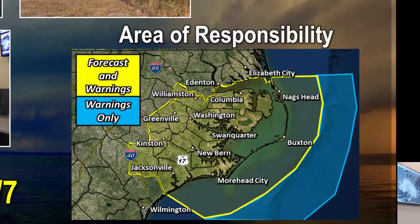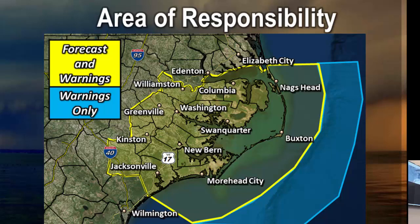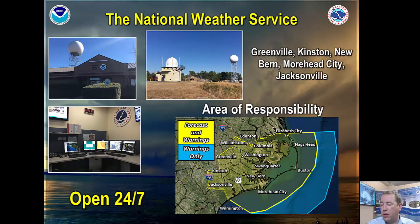The map on the lower right shows our coverage area. The area in yellow is where we issue forecasts and warnings, out to 20 nautical miles, including the Albemarle and Pamlico Sounds. It's roughly a two-to-three hour radius around our office, with Greenville, Kinston, and Jacksonville on our western edge. Wilmington, Raleigh, and northeast North Carolina are covered by sister offices — Wakefield or Richmond, Virginia covers northeast North Carolina, Raleigh covers the central part of the state, and Wilmington covers southeast North Carolina. This training is for the Morehead City area, but shoot me an email when you're done and I can connect you with your local office to become a spotter in their database.